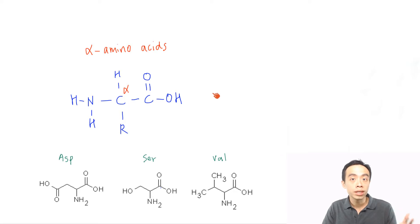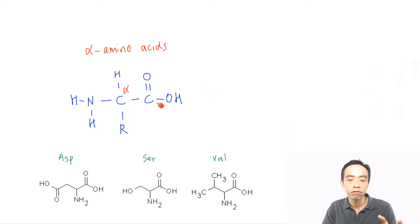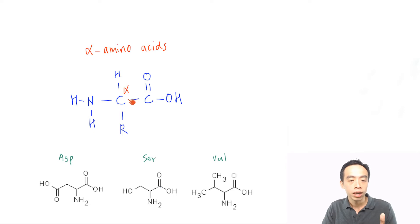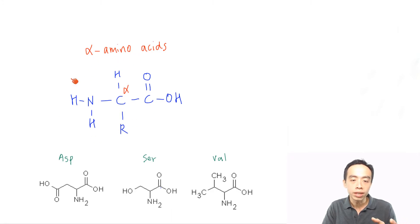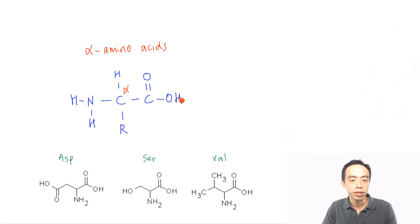Now in proteins, we have about 20 alpha amino acids. They are called alpha amino acids because the reference functional group is the acid functional group, and the first carbon attached to the acid will be the alpha carbon. I have an amine group attached to my alpha carbon, so this amine group will be called my alpha amino group, making the entire molecule my alpha amino acid.